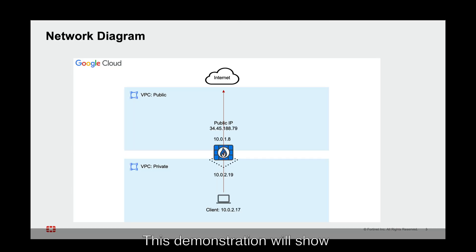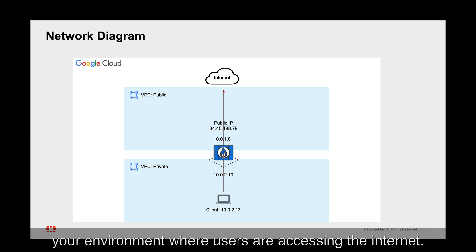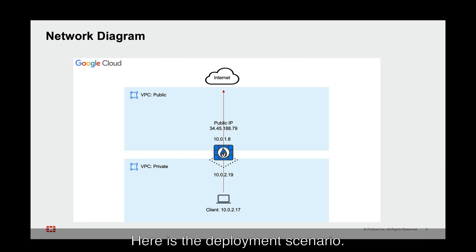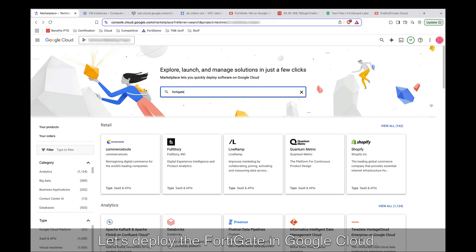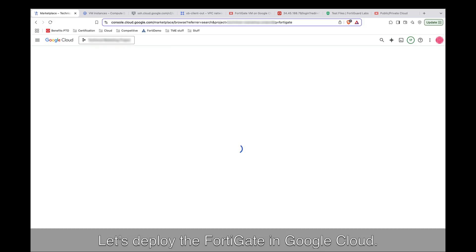This demonstration will show how the FortiGate can protect your environment where users are accessing the Internet. Here is the deployment scenario: a FortiGate VM with public and private interfaces and client traffic routed through the FortiGate to the Internet. Let's deploy the FortiGate in Google Cloud.